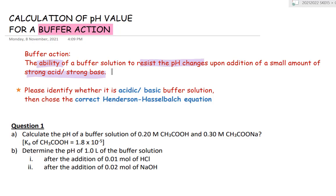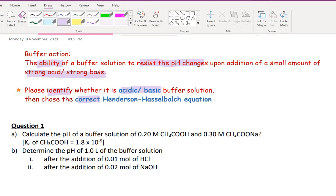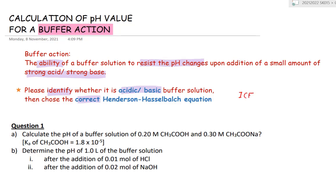In other words, when a small amount of strong acid or strong base is added to a buffer solution, it will only have very little change in its pH value. To solve the calculations for buffer actions, you need to first identify whether it is an acidic or basic buffer solution. Then you need to choose the correct Henderson-Hasselbalch equation. For buffer actions, it requires your ICE table.